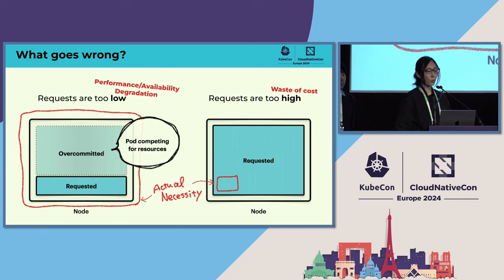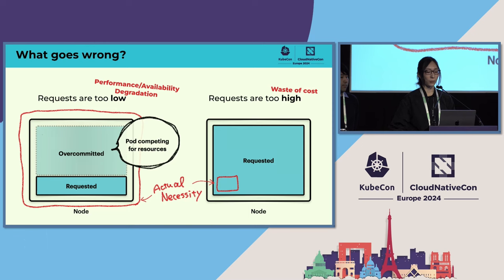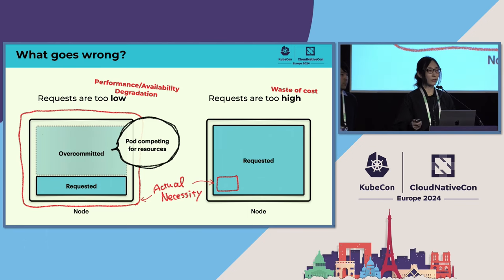So what can go wrong if we set wrong values? If we set requests too low, it could damage service performance and availability. Overcommitting is useful for covering temporary spikes, but if pods constantly compete for resources, it leads to frequent evictions and OOM. Conversely, setting too many resources beyond what the pod actually needs is also a problem — computing resources are not free, so this is a waste of cost.